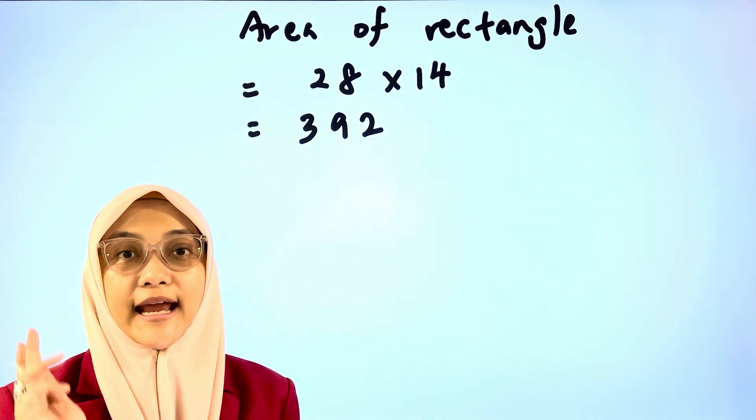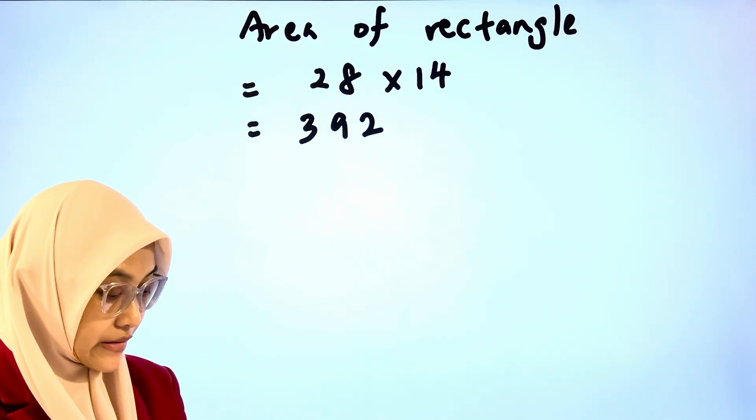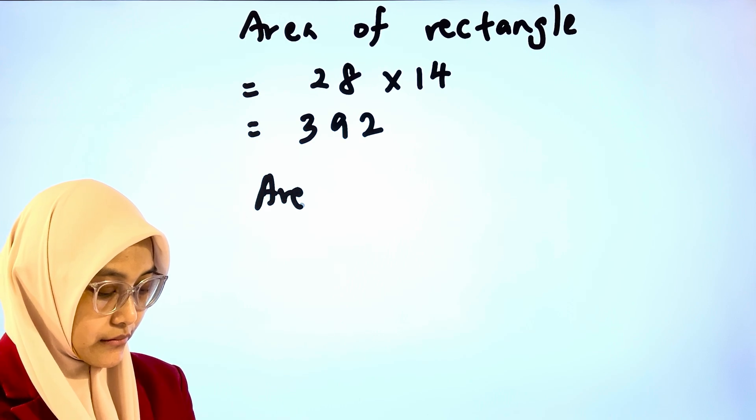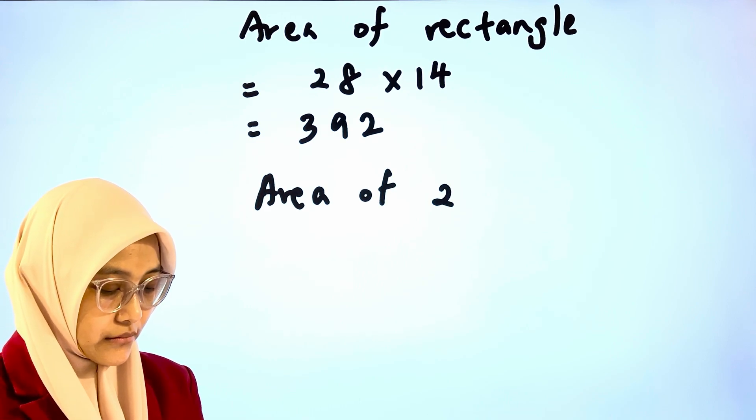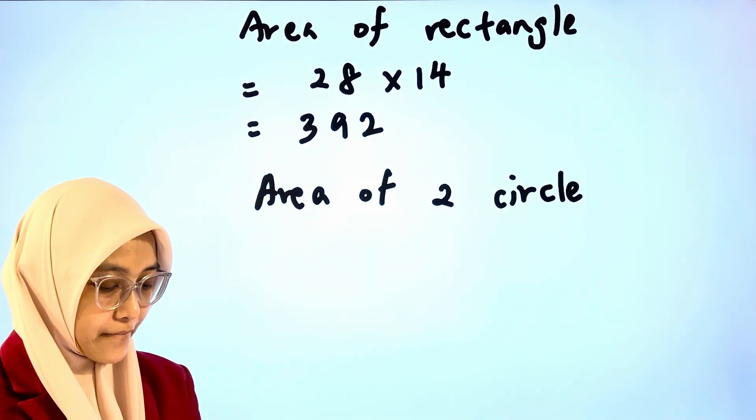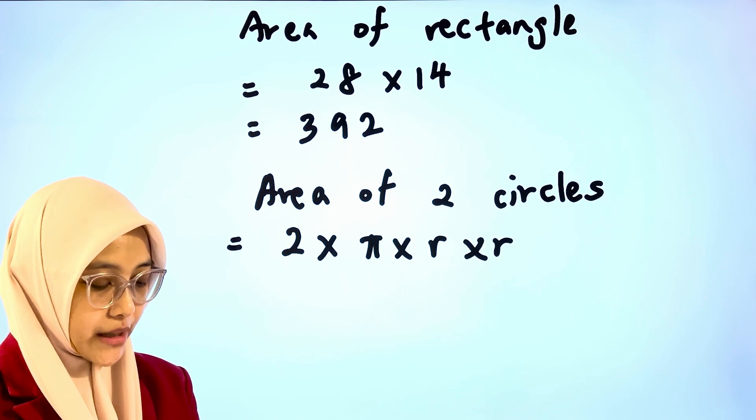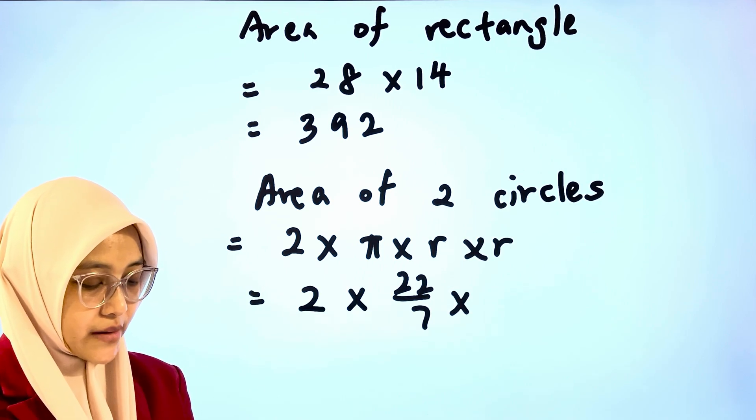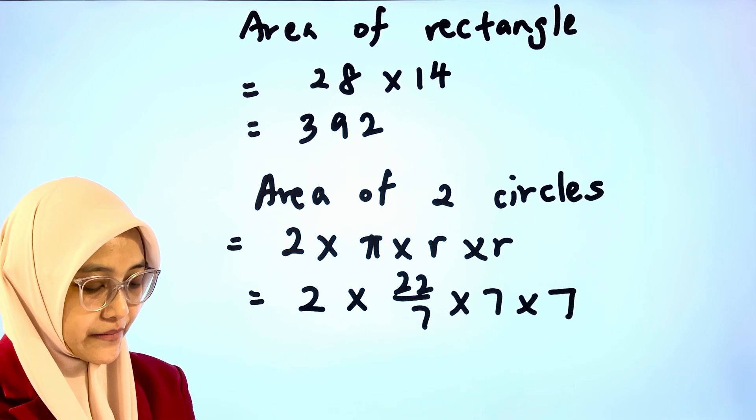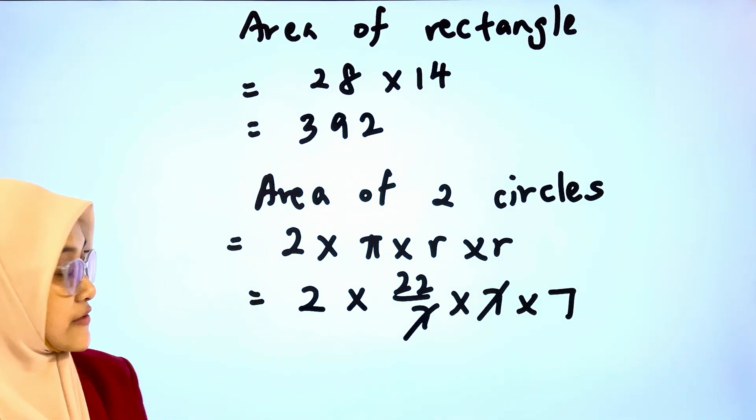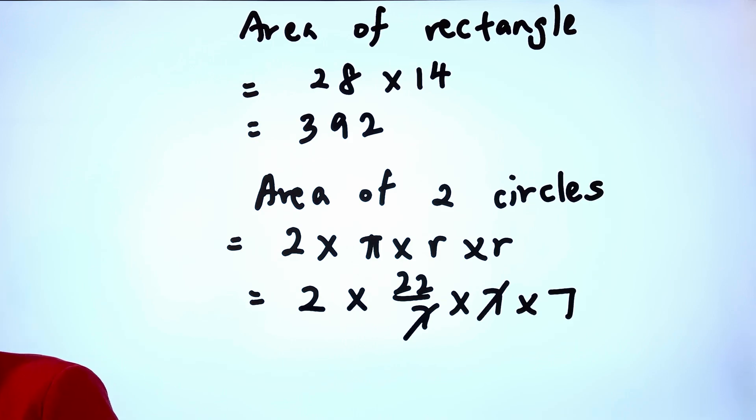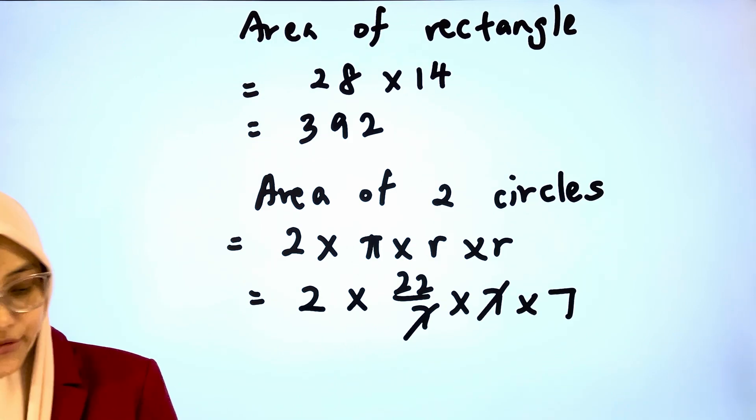And we need to find area of two full circles. This is 2 multiplied by pi multiplied by radius multiplied by radius. 2 multiplied by 22 out of 7 times 7 times 7. So that is 44 multiplied by 7. 308.